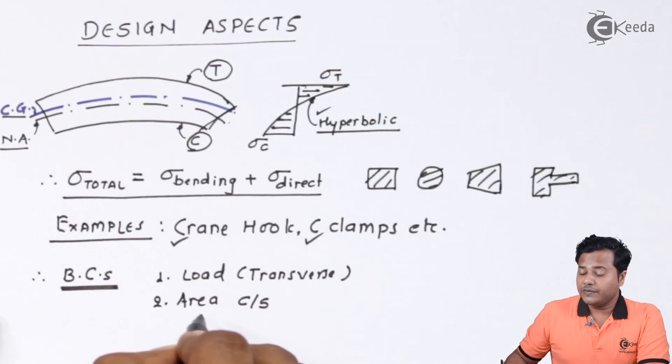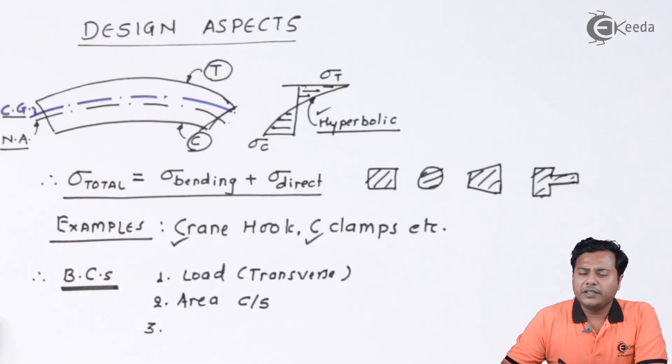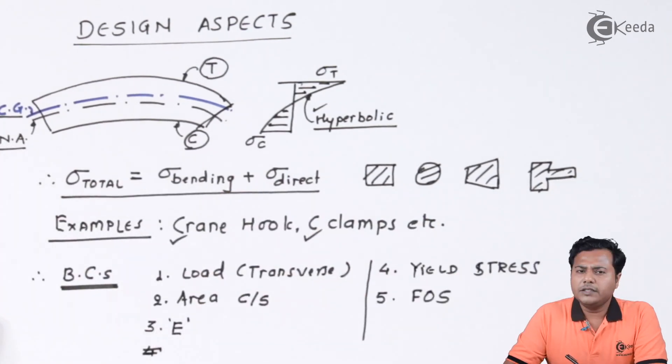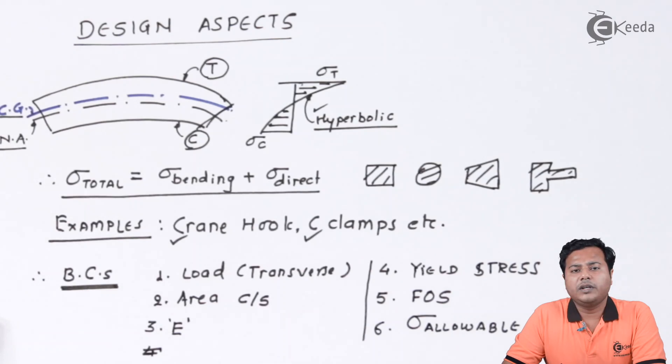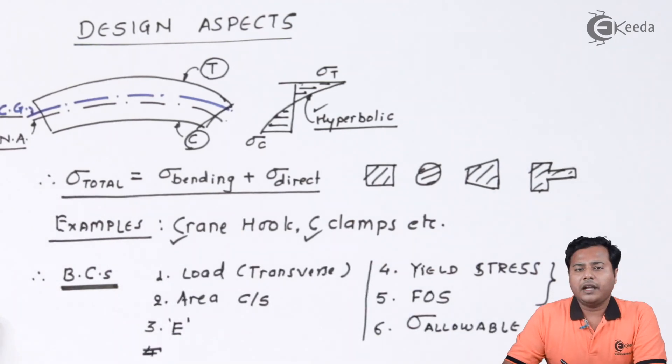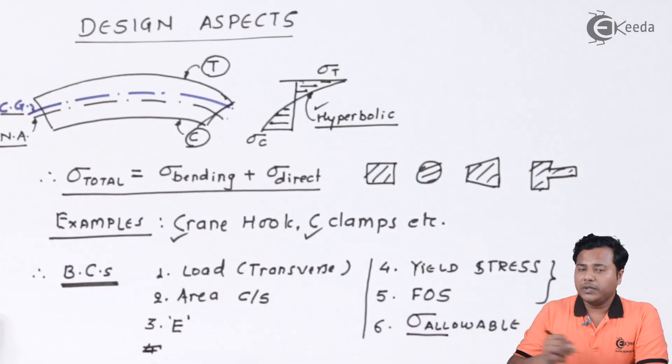So the cross section area is very important. The next thing is material property, Young's modulus. The next is its yield point or its ultimate point. If the material used for a crane hook is elastic, I will prefer its Young's modulus. But if it is a brittle material, I will go for its ultimate point. Yield stress. Next is factor of safety, which is indeed very important. And the last parameter which is quite important is the stress allowed. Because they will specify either yield stress and FOS or they will directly give us allowable stress.